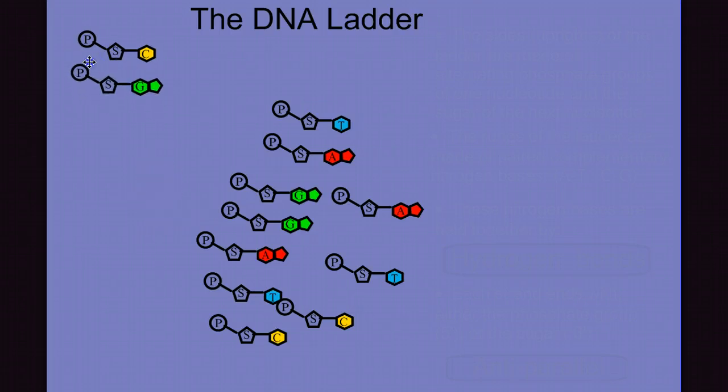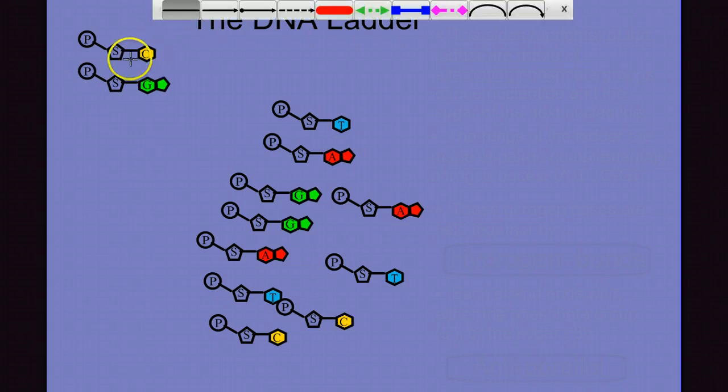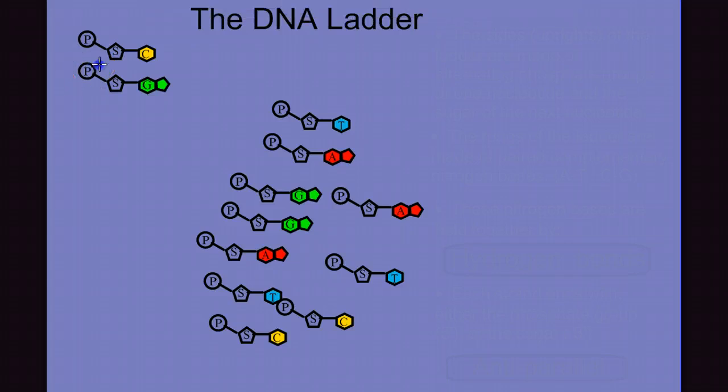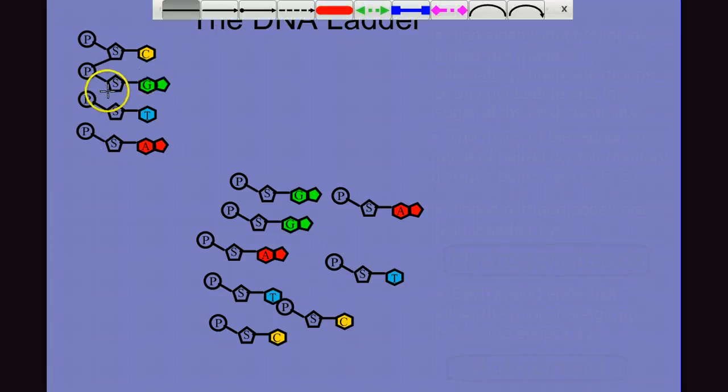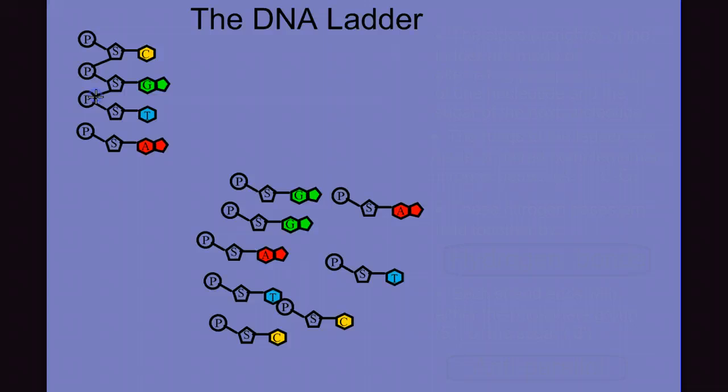I can attach one nucleotide to the next simply by making a bond between the phosphate of one and the sugar of another. The sugar-to-phosphate bond is how we attach one nucleotide to the other. The sugar of one to the phosphate of the next, and I can continue.